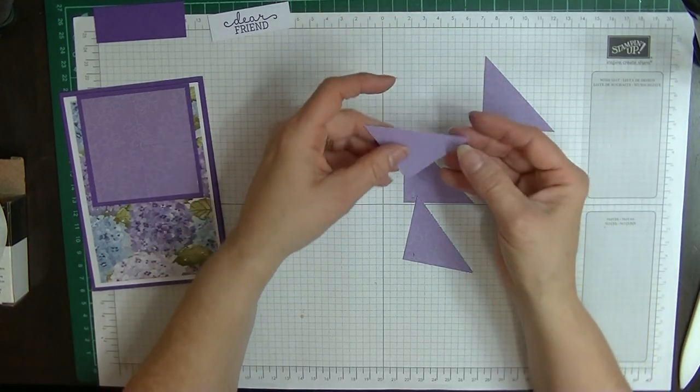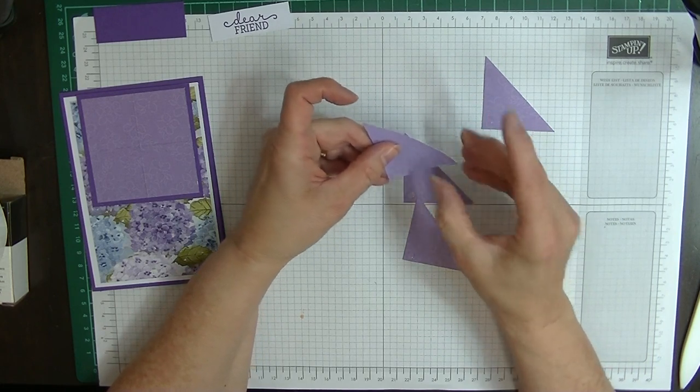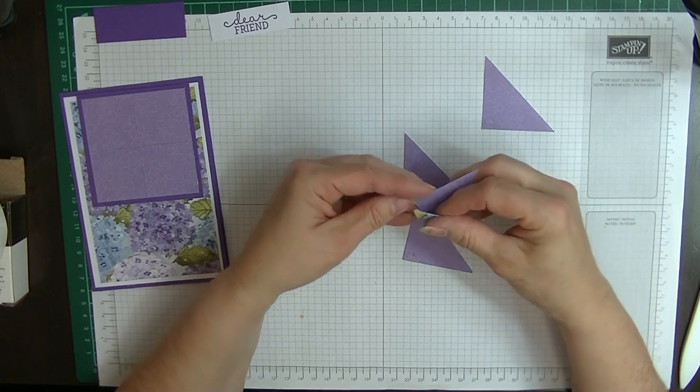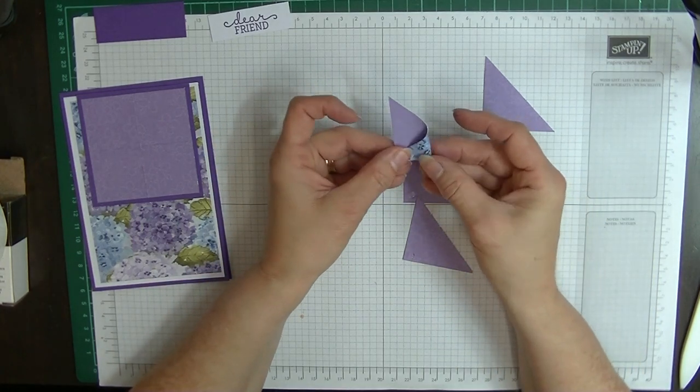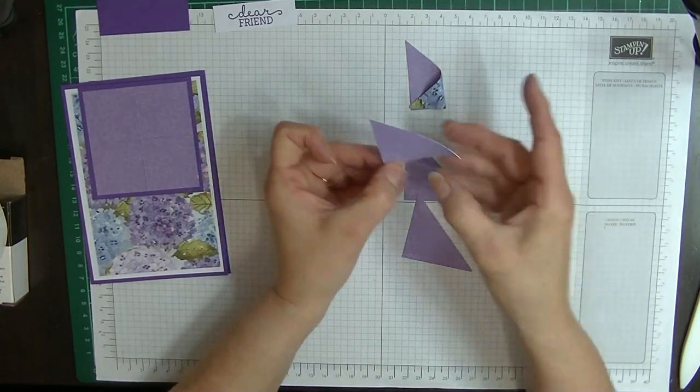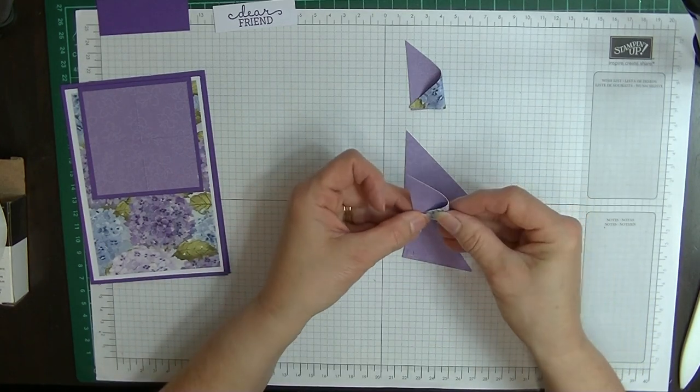I've got my glue dots here and we're going to pop a glue dot on the corner of each one of these over here, just in the corner like so. By doing this as we go, we know we've got them all the same way.